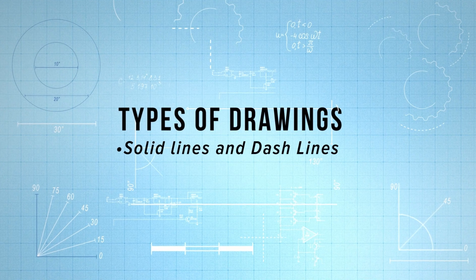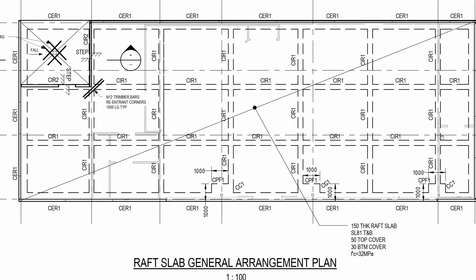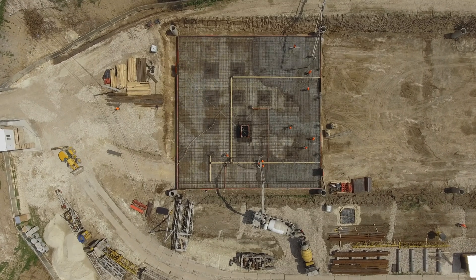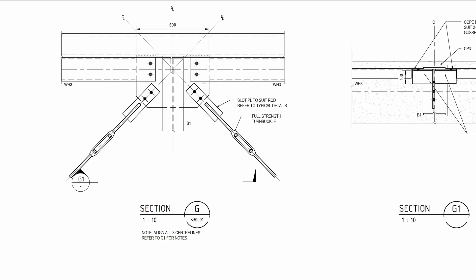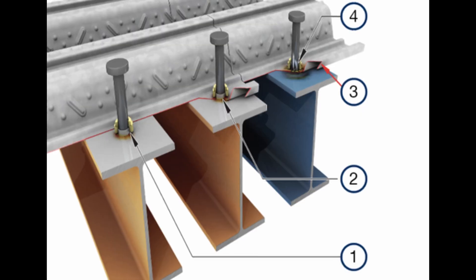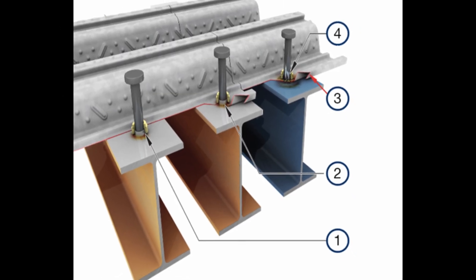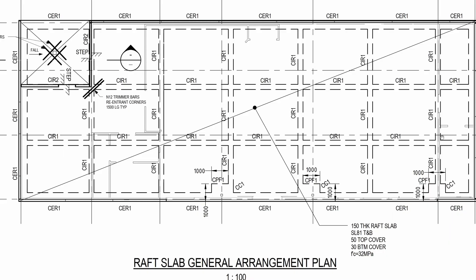When looking at plans, there's a key nomenclature to be aware of: solid lines versus dashed lines. A solid line typically means you're looking down and can see the step or fold in the drawing from above the slab. A dashed line — also called a hidden line — means something is hidden from view, such as the top flange of a steel beam where you can see the web member below. Dashed lines indicate something hidden below the structure.